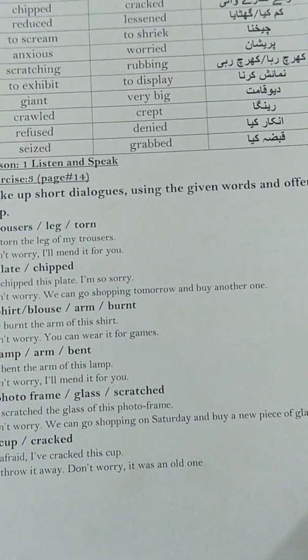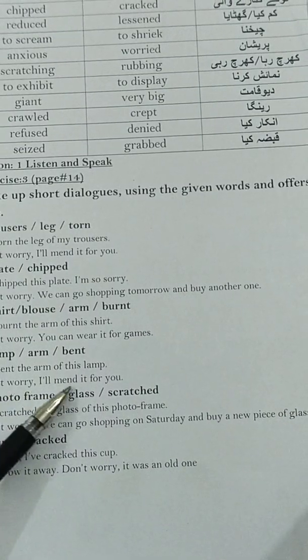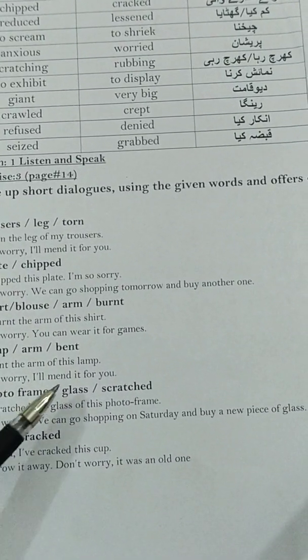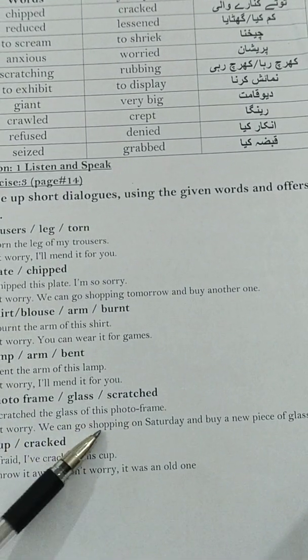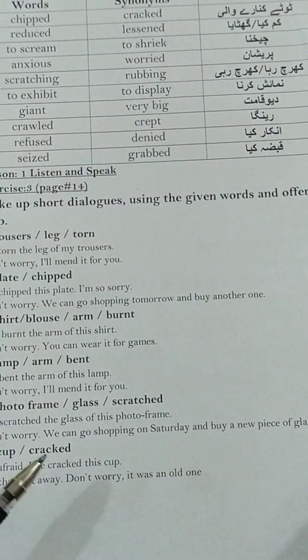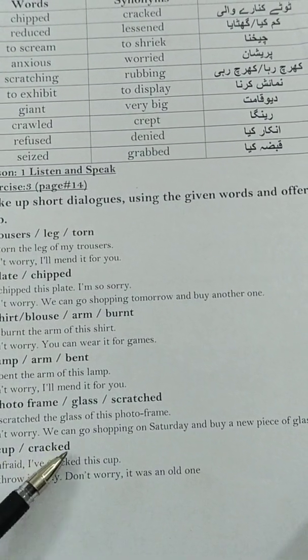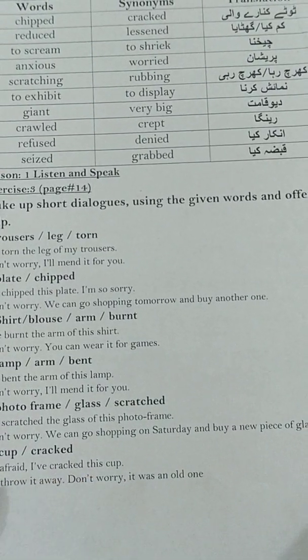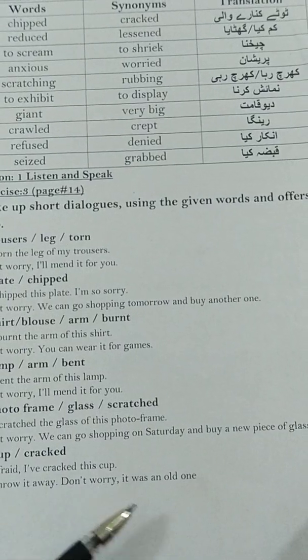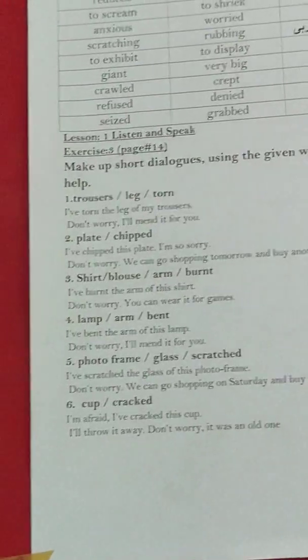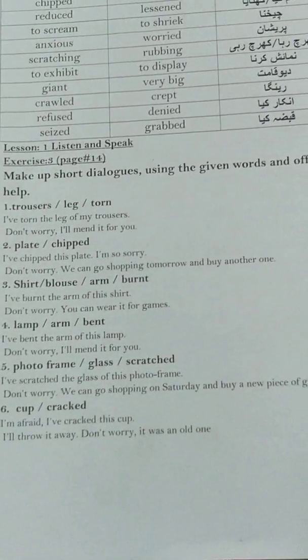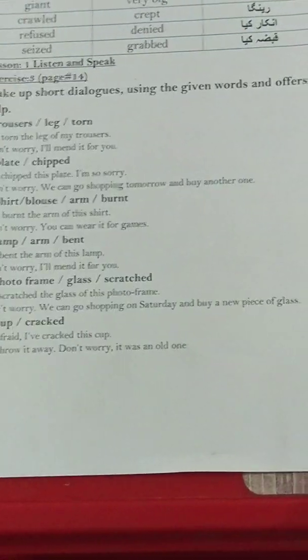Number 4 — Lamp, arm, band: 'I have damaged the arm of this lamp.' 'Don't worry, I will mend it for you.' Number 5 — Photo frame, glass, scratched: 'I have scratched the glass of this photo frame.' 'Don't worry, we can go shopping on Saturday and buy a new piece of glass.' Number 6 — Curb, cracked: 'I am afraid I have cracked this cup.' 'Don't worry, it was an old one.' I will upload the image of this exercise on your portal; with the help of the portal, you have to complete it.